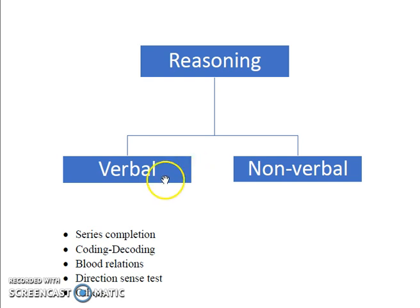Reasoning is categorized into two types: verbal and non-verbal. Verbal reasoning basically includes words, numbers, letters, etc., rather than things, and non-verbal reasoning includes figures.